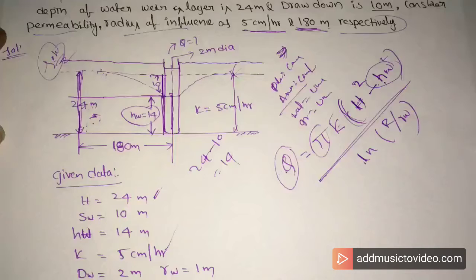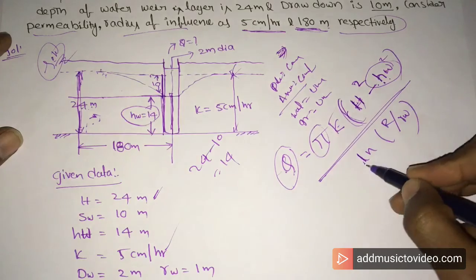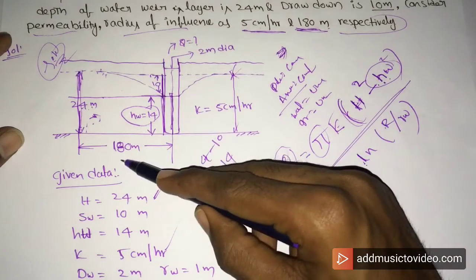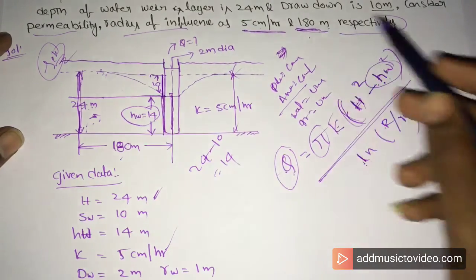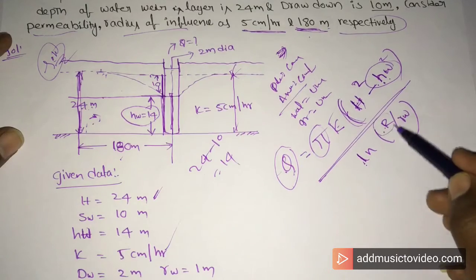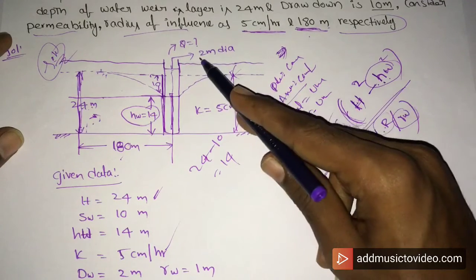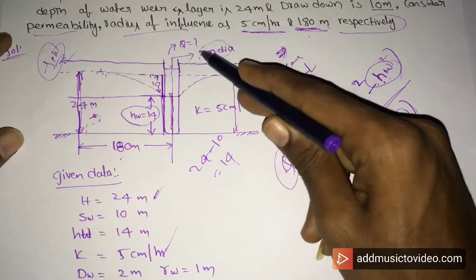Height of water level is 14 meters. Radius of influence is 180 meters. Radius of the well, with 2 meters diameter, is 1 meter.